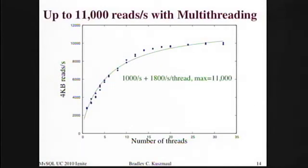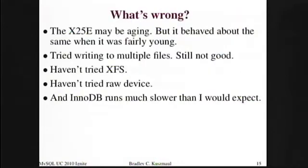I did manage to get more reads per second by doing multi-threading. By getting a whole bunch of threads trying to read random blocks at the same time, I was able to get up from 4,000 reads per second up to 11,000. That's still short of the 35,000 that the spec sheet predicted, but that's one way to get some performance.